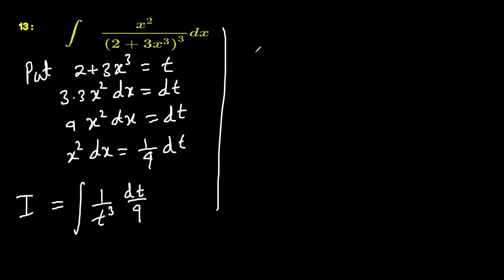That means we can write our question as t to the power negative 3 and dt, and 1 by 9 outside.